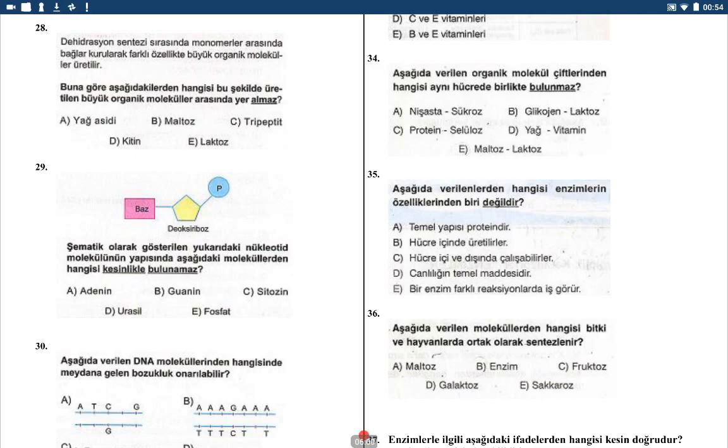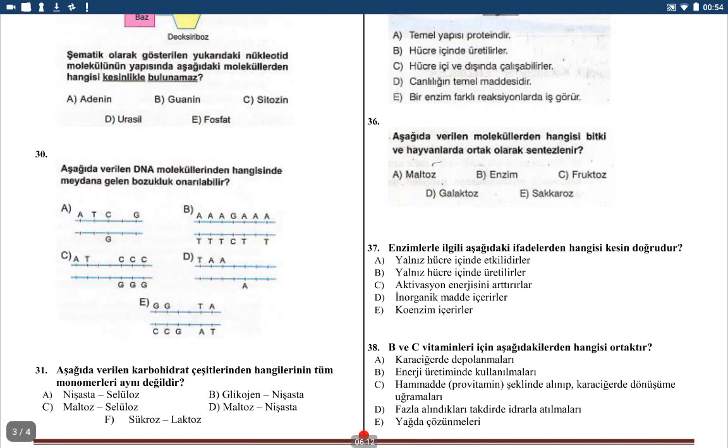To our sister republics south of our border, we offer a special pledge to convert our good words into good deeds in a new alliance for progress to assist free men and free government in casting off the chains of poverty. But this peaceful revolution of hope cannot become the prey of hostile powers. Let all our neighbors know that we shall join with them to oppose aggression or subversion anywhere in the Americas. And let every other power know that this hemisphere intends to remain the master of its own house.